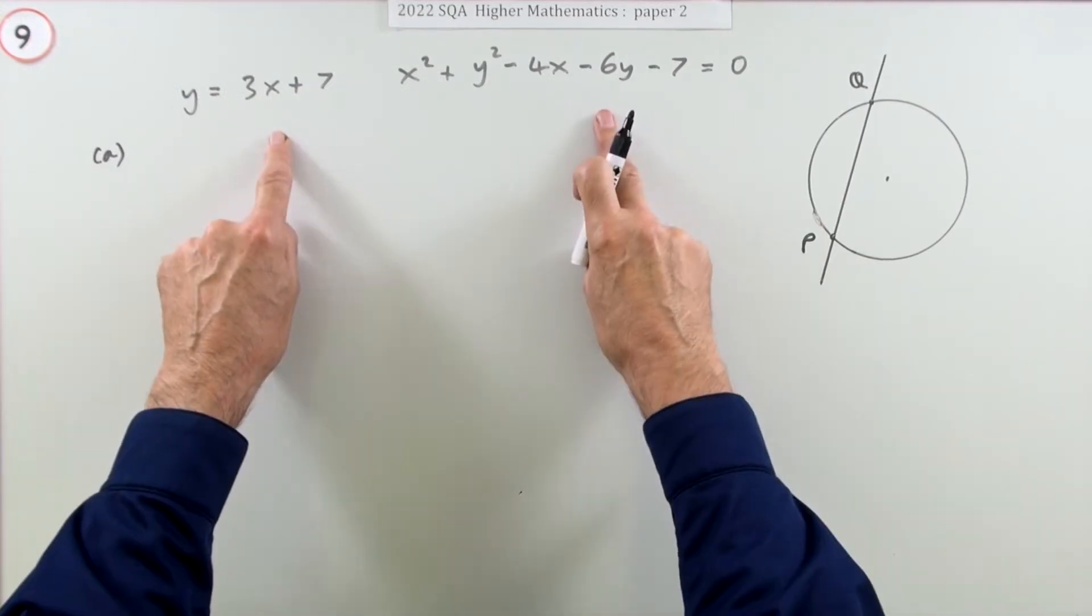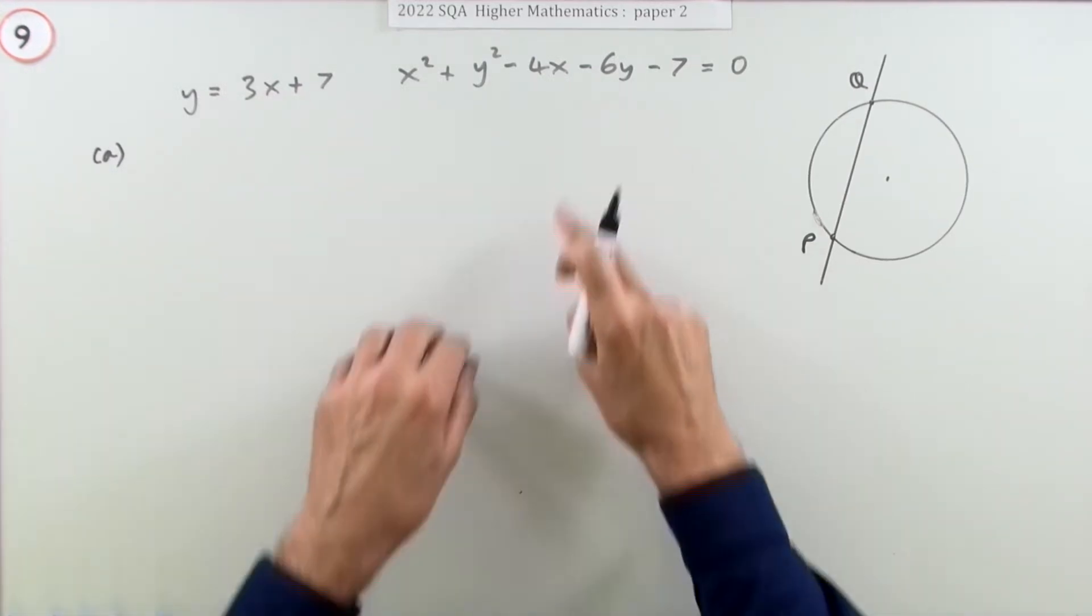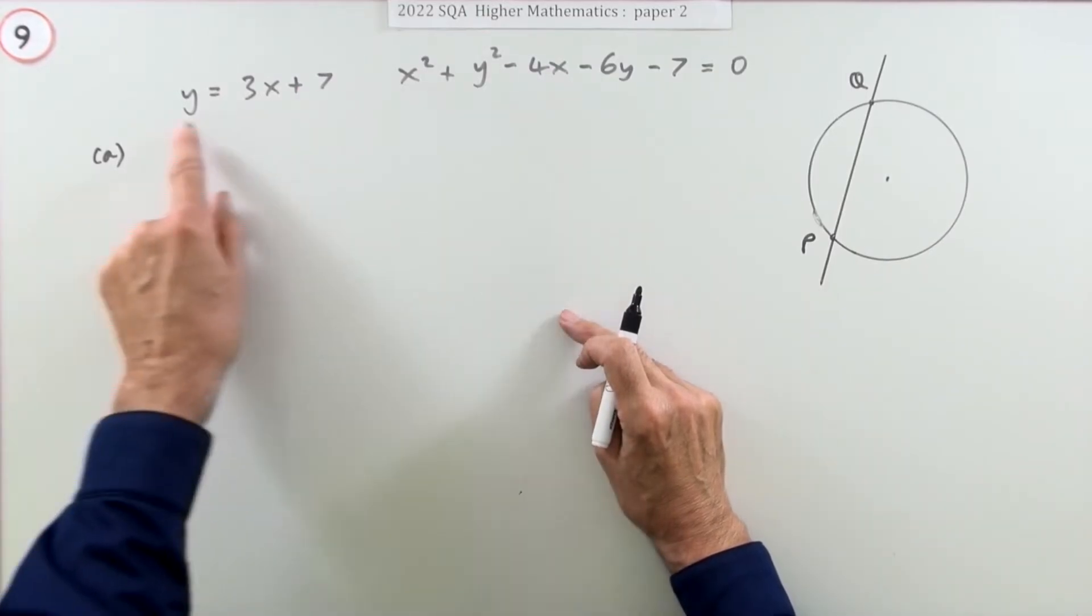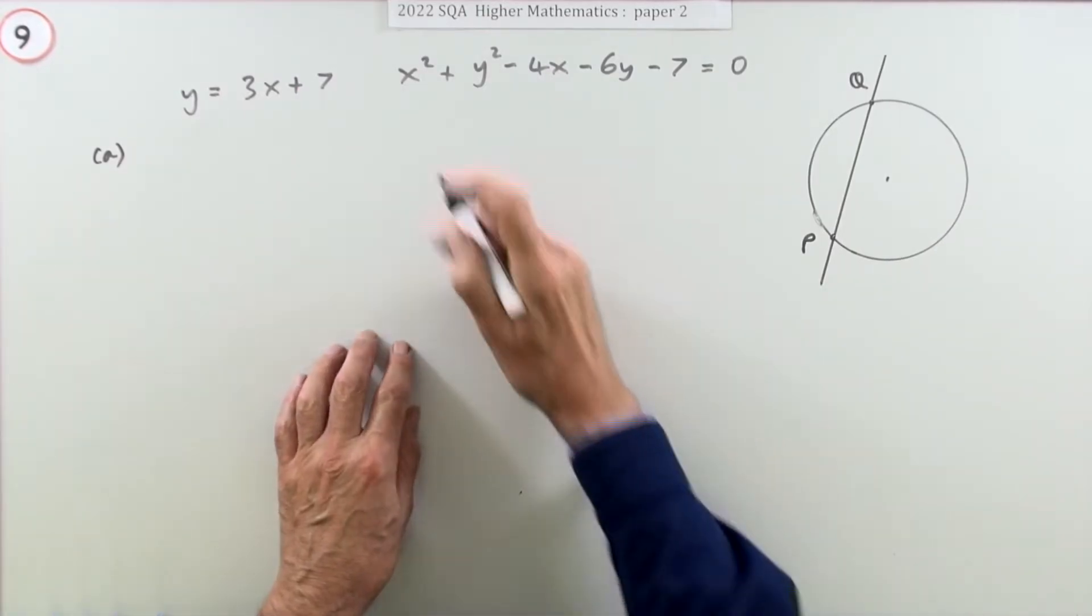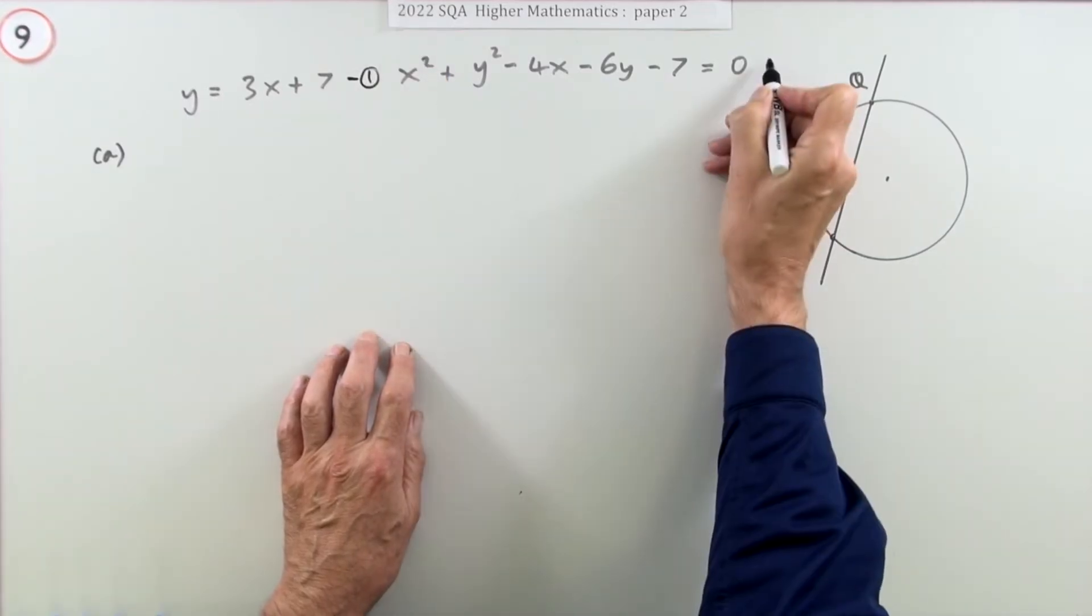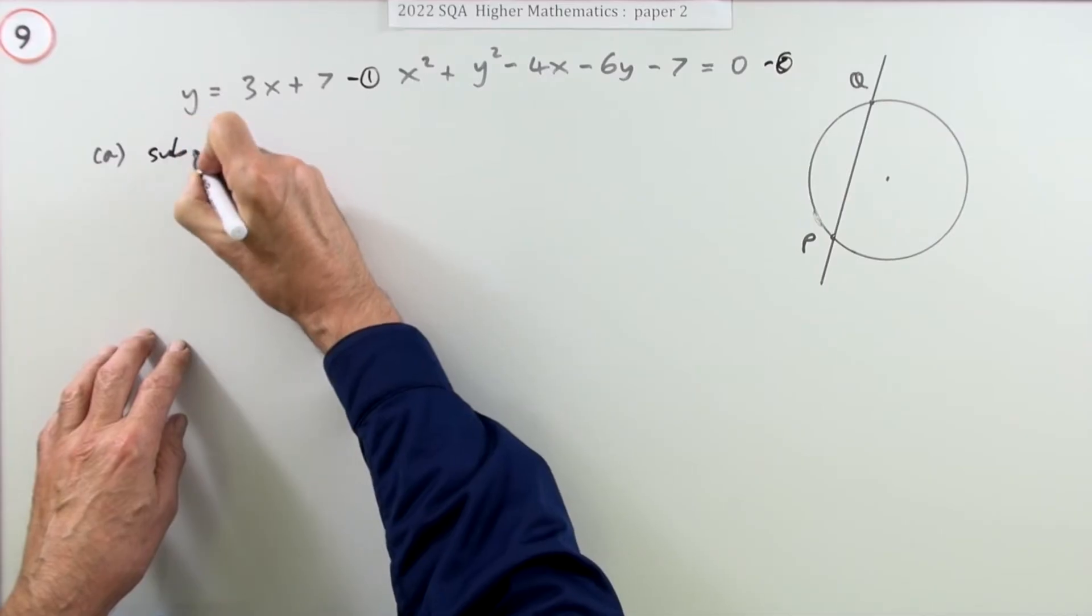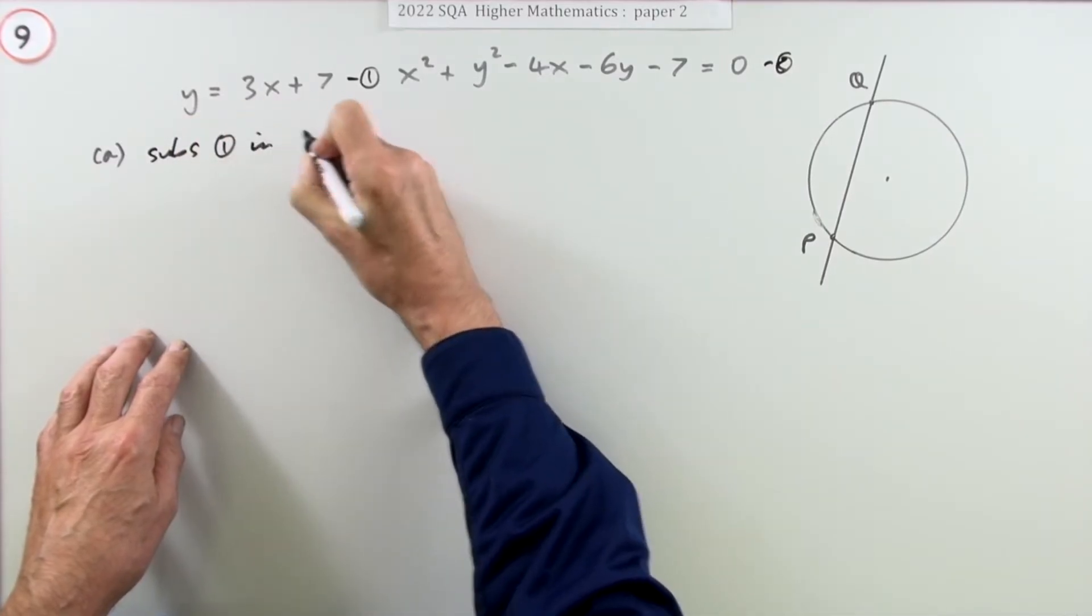Well, you've got simultaneous equations and it has to be substitution. You're just going to substitute that into this. Wherever you see y, instead of y you write 3x plus 7. Maybe I'll just give them names. Because what I'm going to do is I'm going to substitute 1 in 2.